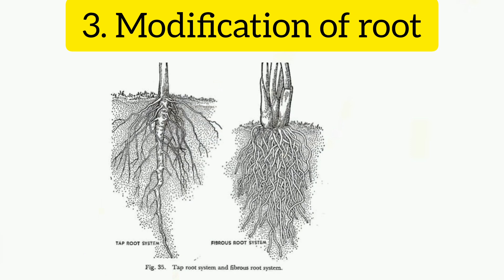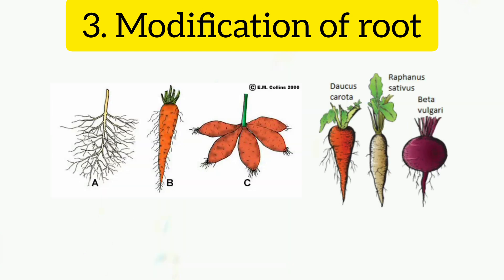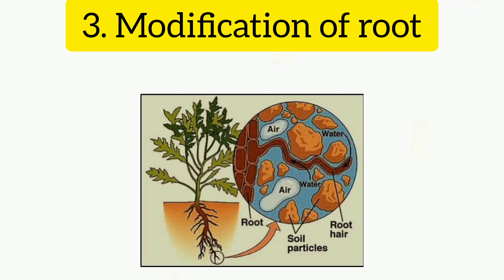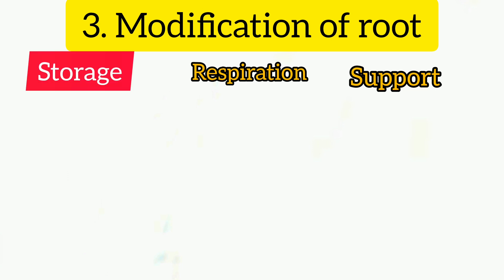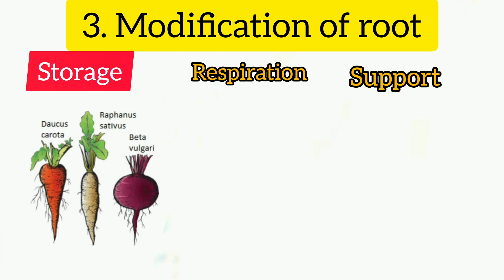Modification of root: roots are normally for absorption and conduction of water, but in some plants they take on different shapes and structures for storage, respiration, and support. For example, carrot and beetroot are modified dicot tap roots used for storage of food material.